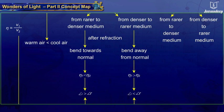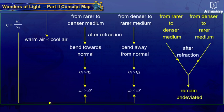When a light ray is incident normal to the interface between any two media—either from rarer to denser or denser to rarer medium—light propagates undeviated.